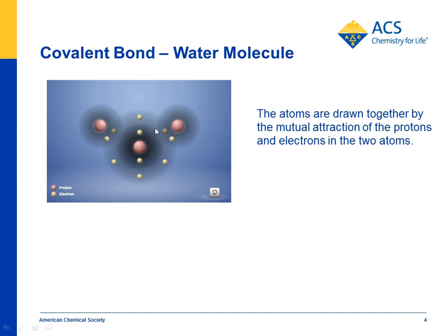So they come together and bond. Now these electrons are near more protons, and it's a more stable arrangement than it was when they were unbonded. So this is what we say — it's at a lower energy level.